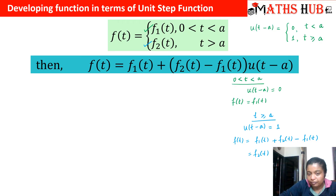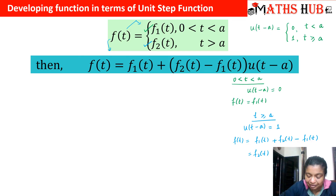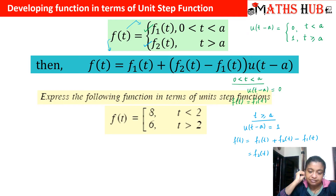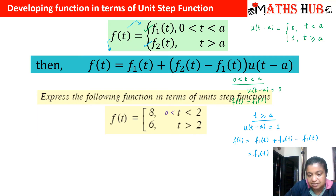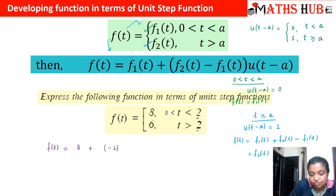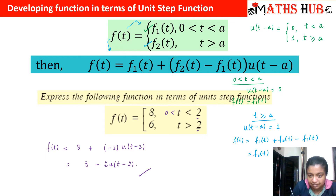So if you have any function of this form you can always write it in terms of unit step functions as f₁(t) + [f₂(t) minus f₁(t)] · u(t minus a), where the change occurs at a. Applying this pattern to our example: for 0 < t < 2 the value is 8, and for t ≥ 2 the value is 6. So f(t) = 8 + (6 minus 8) · u(t minus 2) = 8 minus 2 · u(t minus 2).